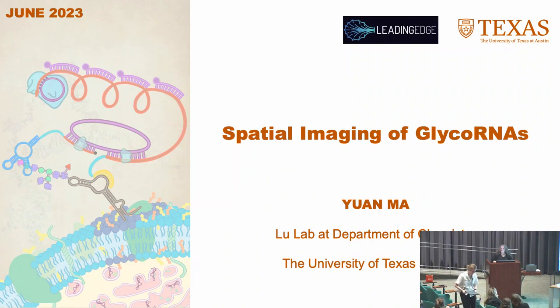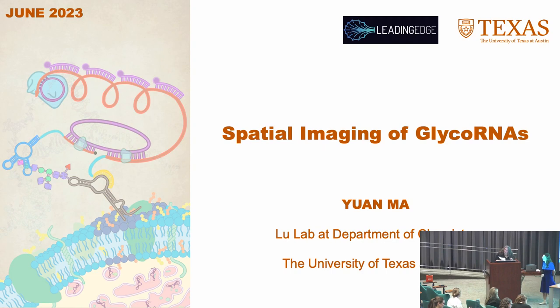Our next amazing speaker is Dr. Yuen Ma. She received her PhD at Shanghai Jiaotong University in China, and she's currently working at the University of Texas at Austin. The title of her talk is Spatial Imaging of GlycoRNA in Cells via DNA Aptamer, an RNA in-situ hybridization-mediated proximity ligation assay.